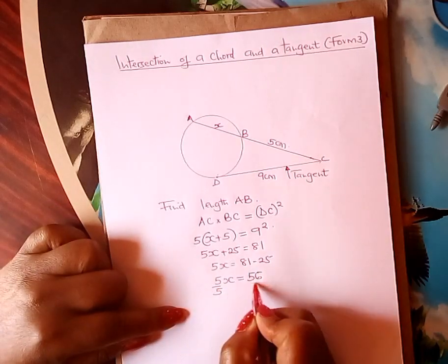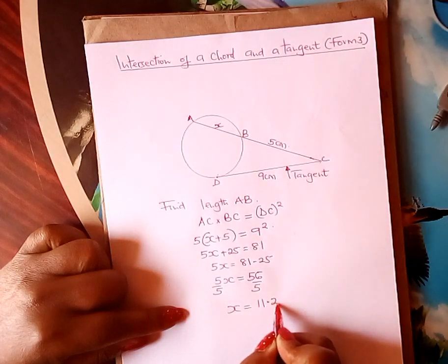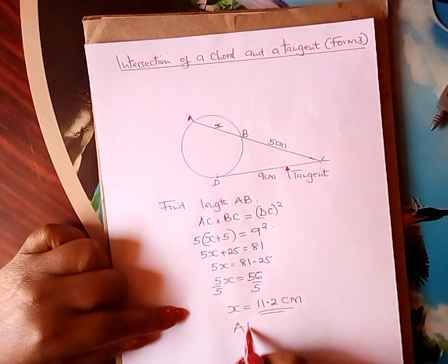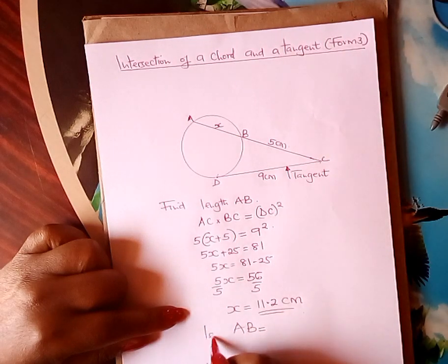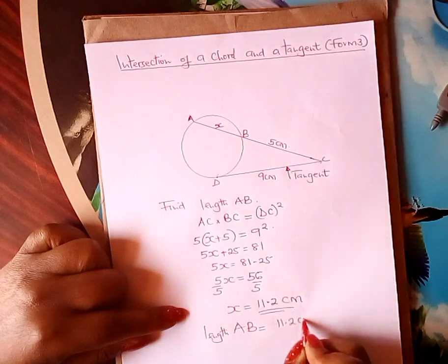Divide by 5. Your X is 11.2 centimeters. And so that is the length of AB. Length AB learner is 11.2 centimeters.